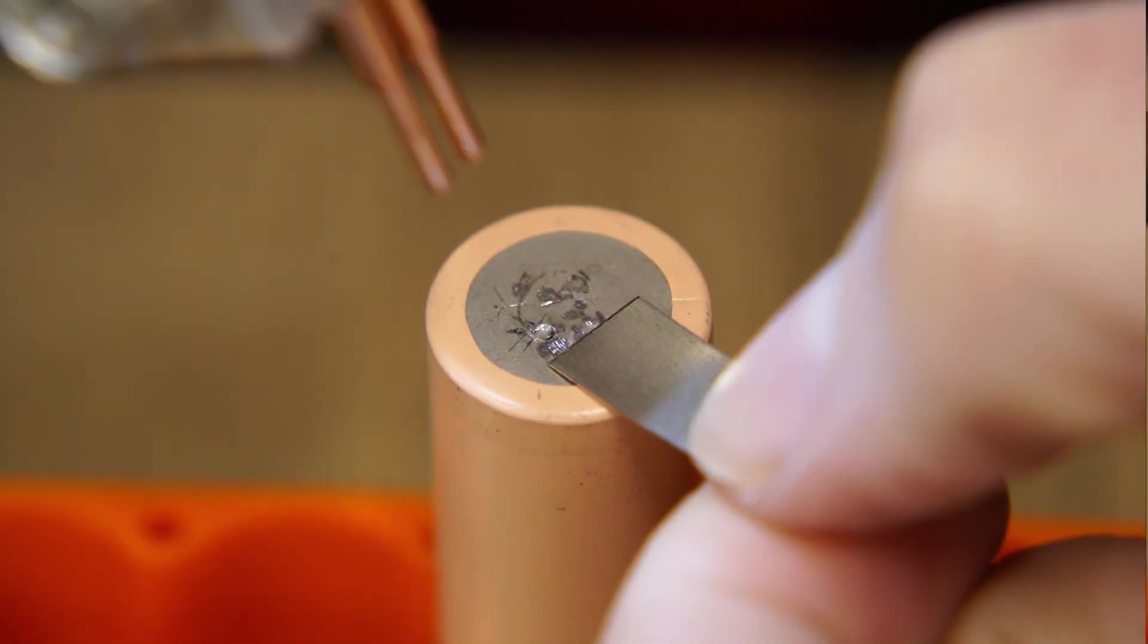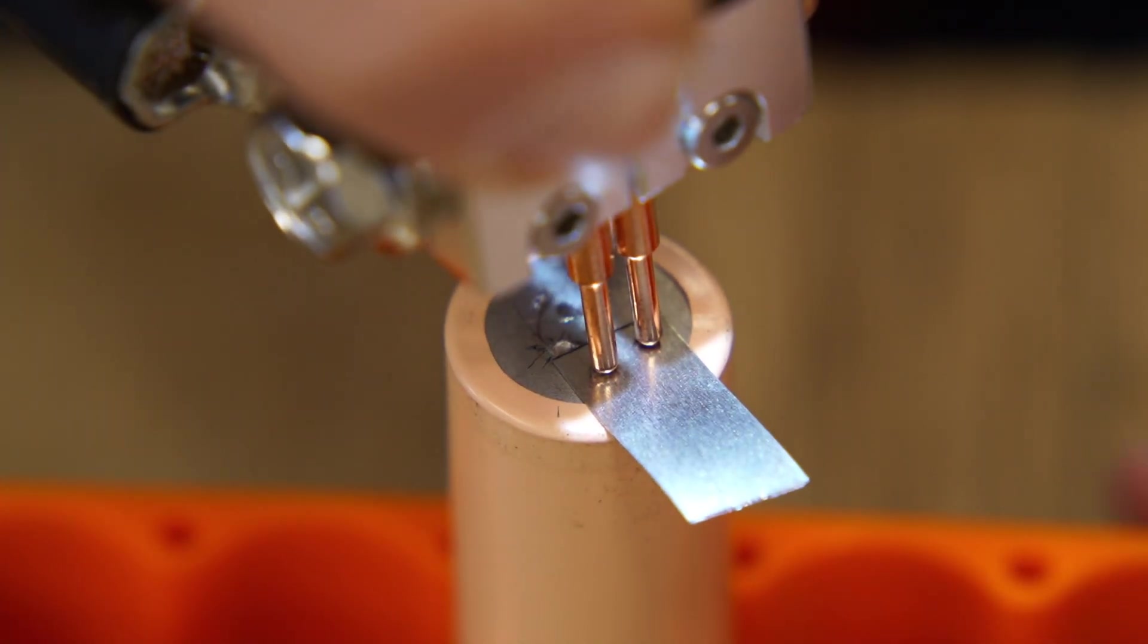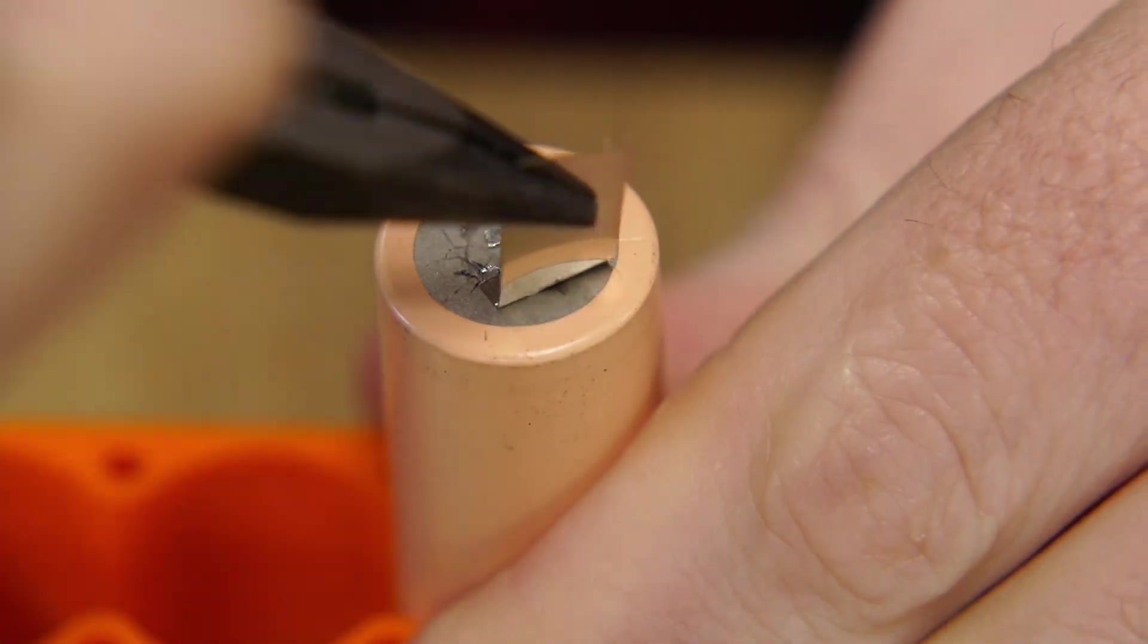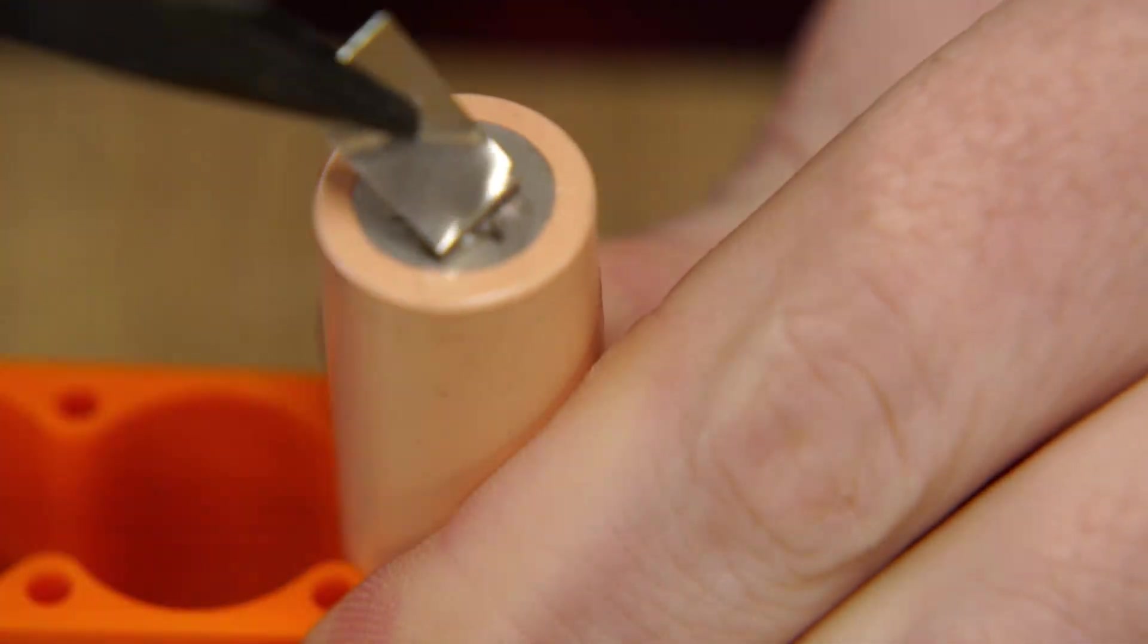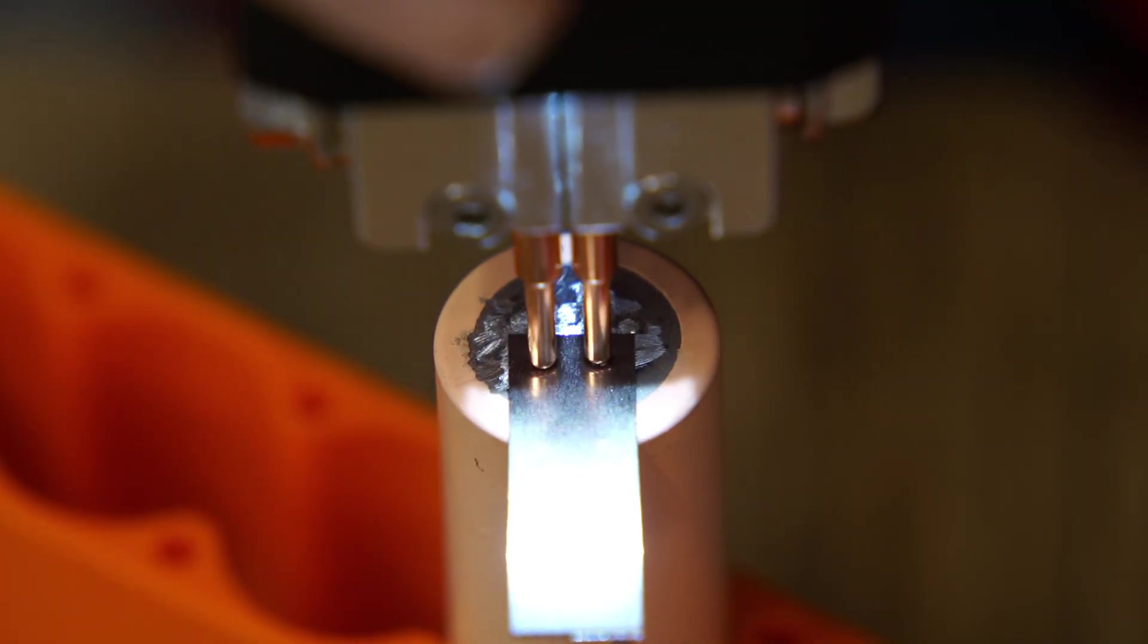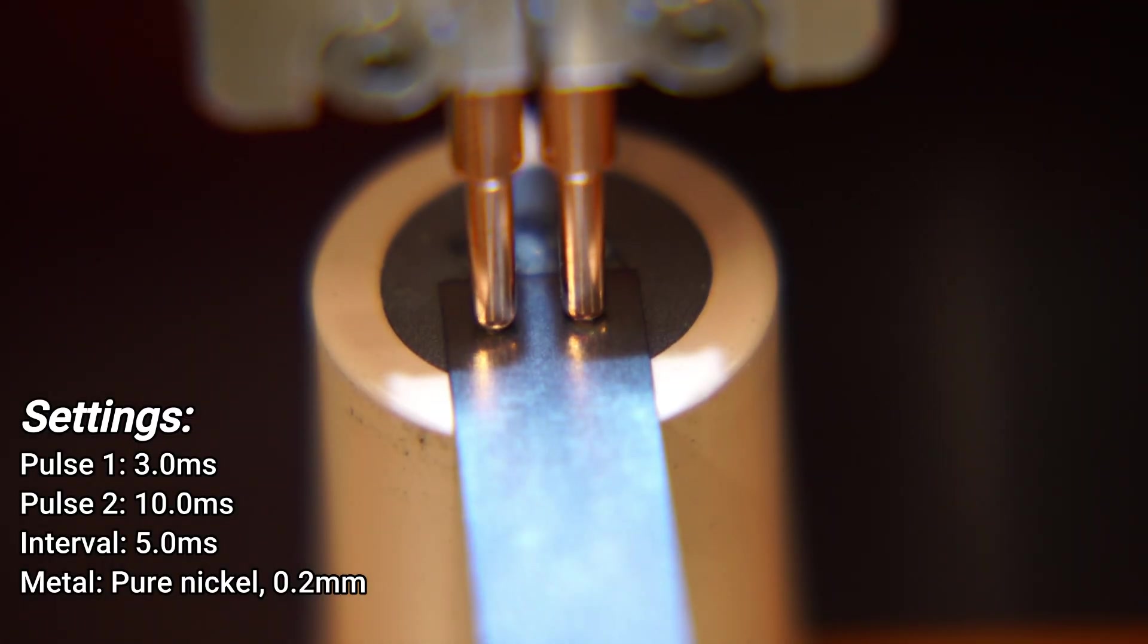I then moved on to spot welding 0.2 pure nickel strip. It took me several attempts to dial in the settings, but ultimately the settings on the screen produced very strong welds.